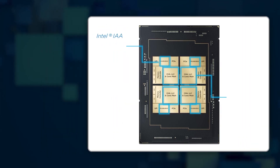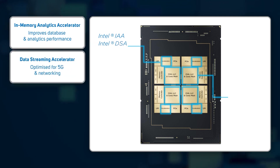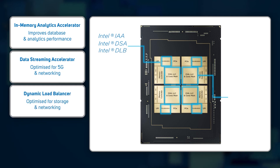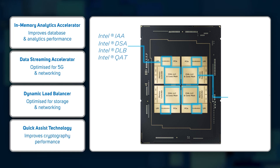These include Intel In-Memory Analytics Accelerator (IAA), Intel Data Streaming Accelerator (DSA), Intel Dynamic Load Balancer (DLB), and Intel Quick Assist Technology (QAT). The 6900 series CPUs also feature Intel Advanced Matrix Extensions (AMX), providing up to 16 times more multiply-accumulate operations than the previous generation, and Intel Advanced Vector Extensions 512 (AVX-512), boosting the speed of vector mathematics common to AI, HPC and database workloads.